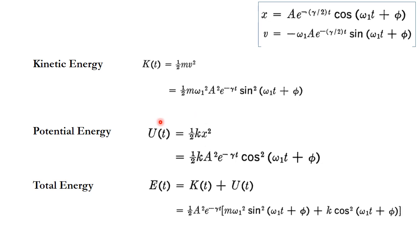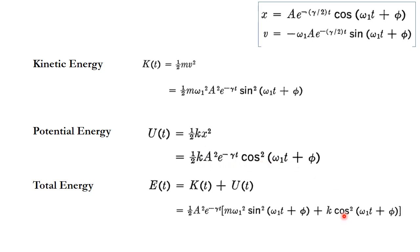To find the potential energy U(t), where x is the solution a times e to the power (minus gamma*t/2) times cos(omega_1*t plus phi), squaring gives a²*e to the power (minus gamma*t) times cos²(omega_1*t plus phi), so U(t) = half*K*a²*e to the power (minus gamma*t) times cos²(omega_1*t plus phi). Adding kinetic and potential energy to get total energy, taking a², e to the power (minus gamma*t), and one-half as common factors, we get: E(t) = half*a²*e to the power (minus gamma*t) times [m*omega_1²*sin²(omega_1*t plus phi) plus K*cos²(omega_1*t plus phi)].